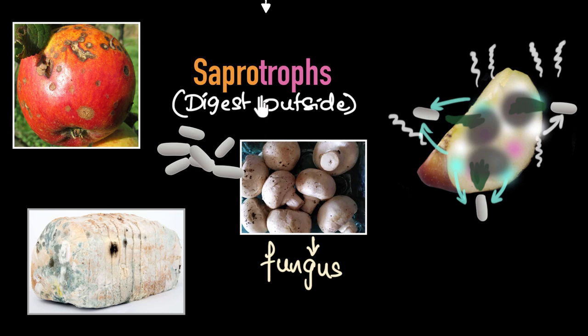So thanks to them, they decompose all the dead stuff as well and recycle all the nutrients. Make sure they go back into the nature, which can be reabsorbed by the plants, reused to make more food. They are super essential for our environment. And the word saprotrophs itself means rotting. And that's why they're called saprotrophs because they eat on the dead and decay and make them rot.